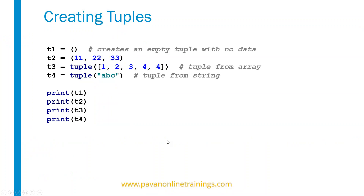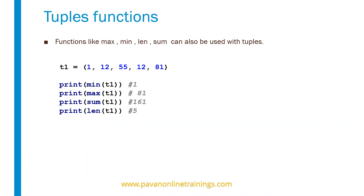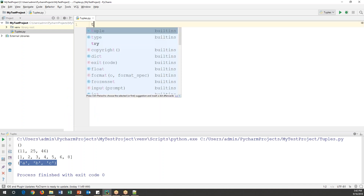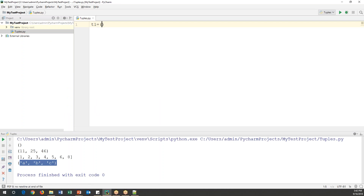Now let's move on to tuple functions. If you want to perform certain actions, Python provides built-in functions like max, min, len, and sum. These are the same functions we used with lists, and they can also be used with tuples. Let me create a tuple t1 with a few random numbers — say 1, 15, 60, 100, and 20.